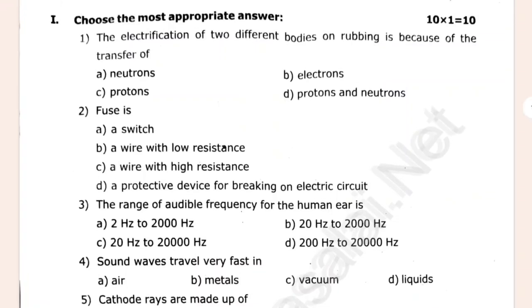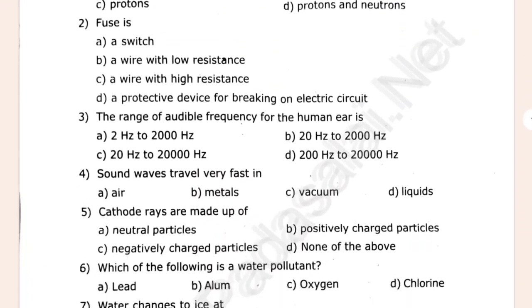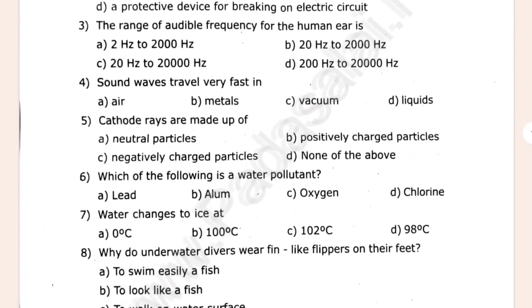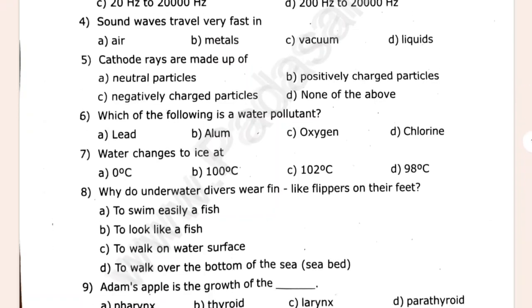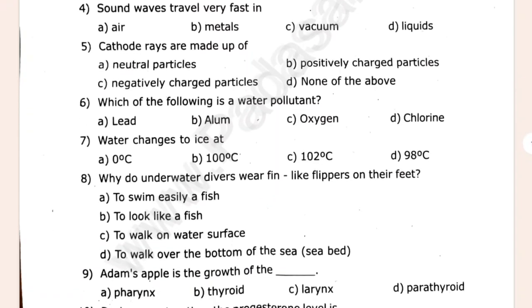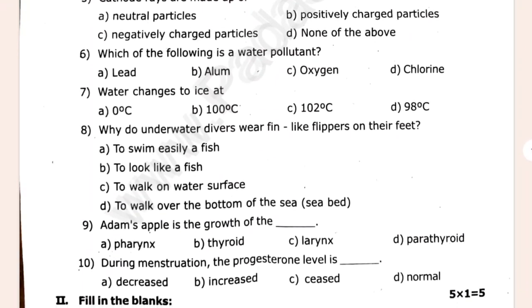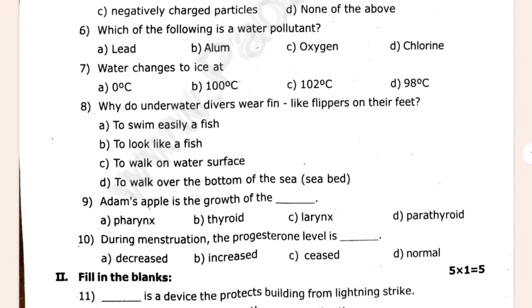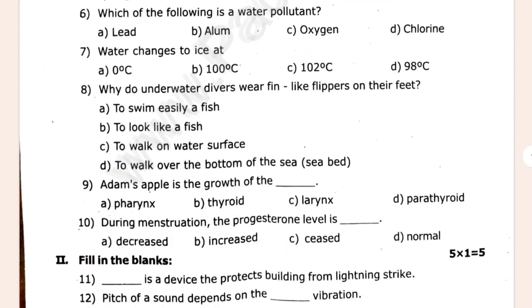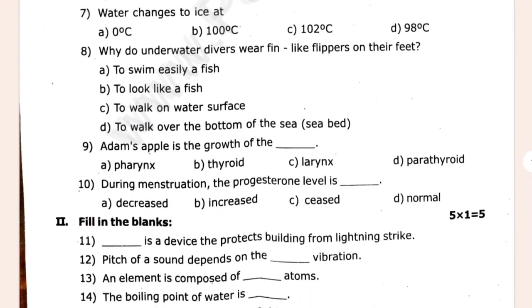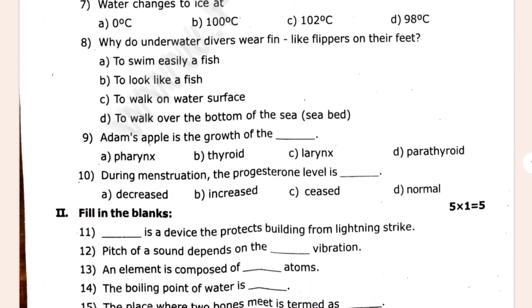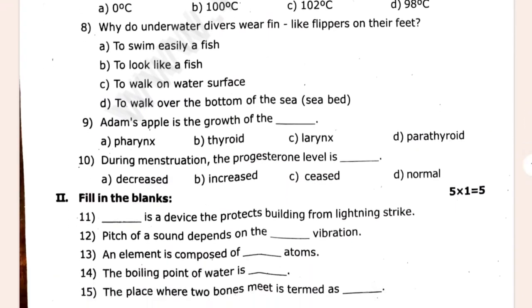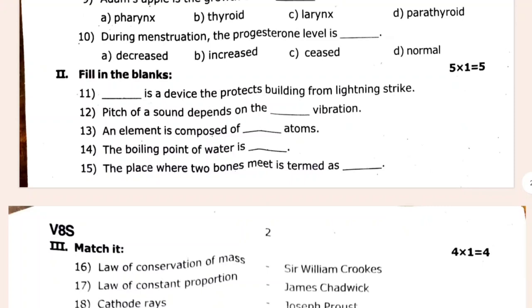1, 2, 3, 4, 5, 6, 7, 8, 9, 10. That is the device that protects buildings from lightning strikes.